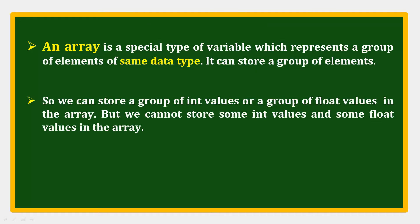So what is an array? An array is a special type of variable which represents a group of elements of the same data type. It can store a group of int values or a group of float values.